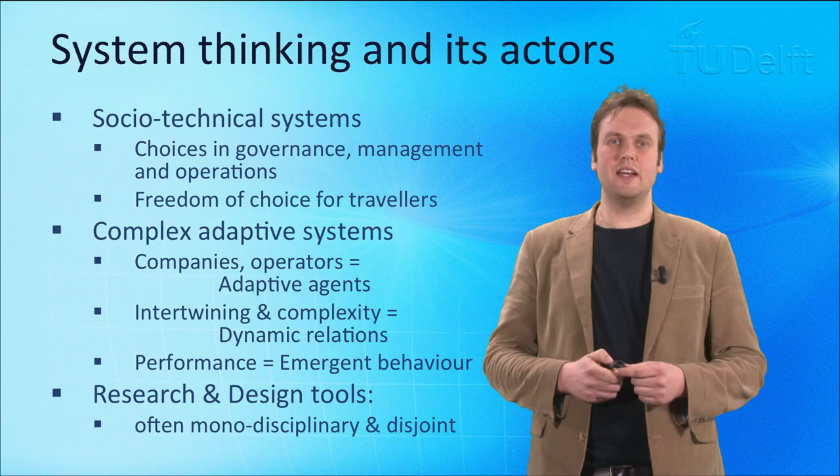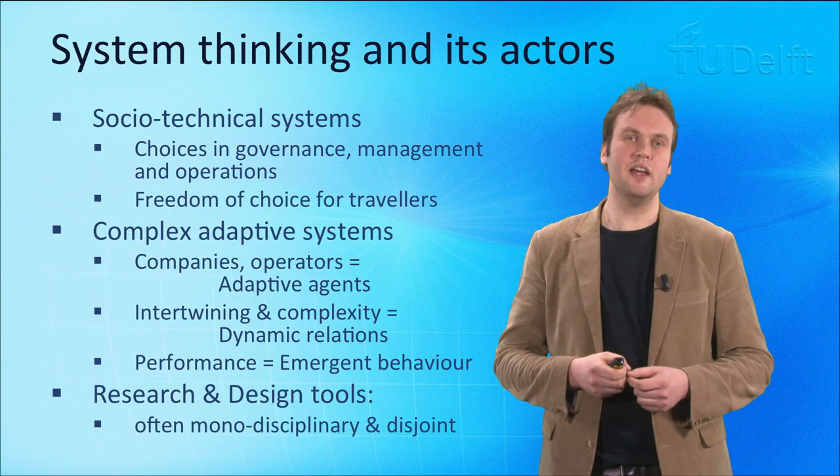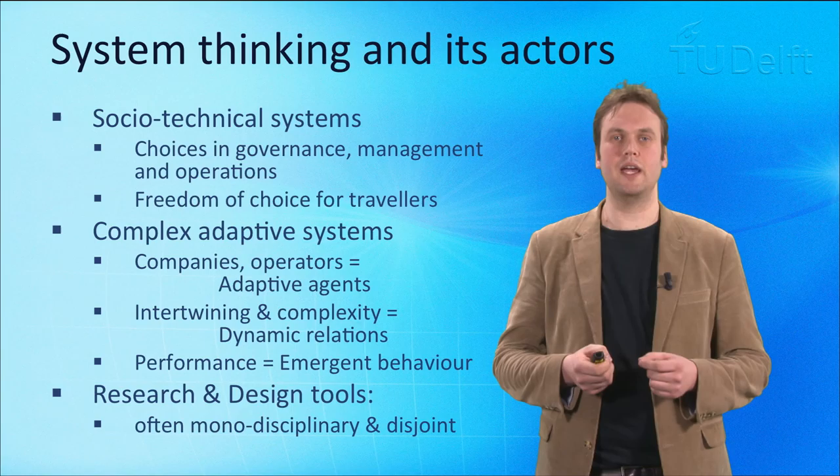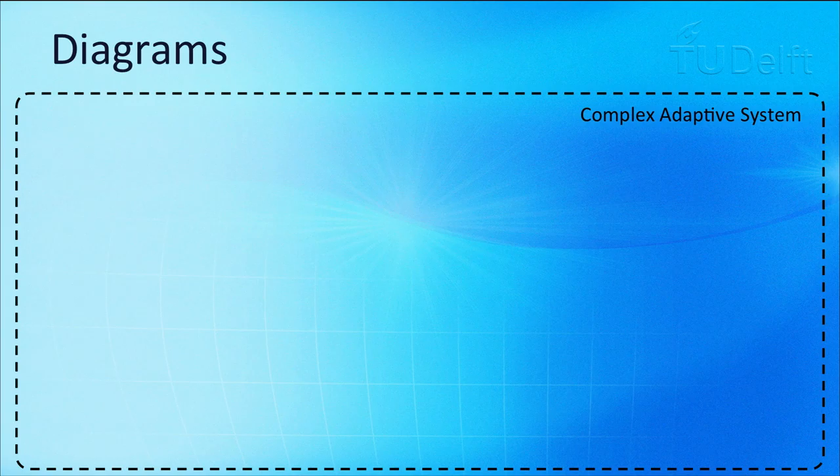What we find is that the research tools in these domains are traditionally monodisciplinary and highly disjoint, meaning there are people that study within the social sciences the behaviour of all these agents, people in business studies that study the behaviour of companies, and people that analyse all kinds of system dynamics. But connecting these to each other is not often done.